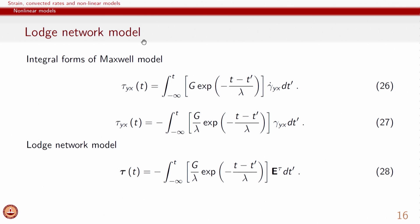We choose to call it the Large Network Model because the origin of its derivation is integral. The Large Network Model is a specific case of the Large Rubber-like Liquid model, where instead of the exponential relaxation modulus from the Maxwell model, any other form of relaxation modulus is used.